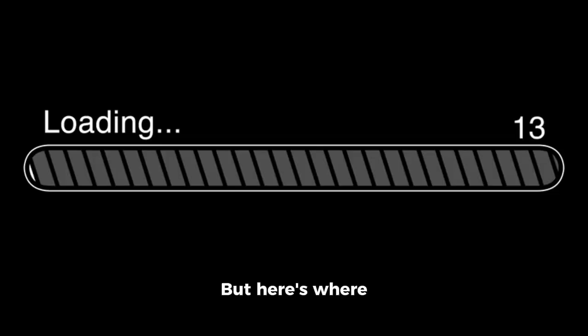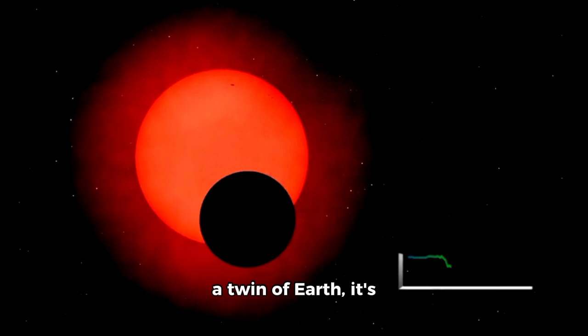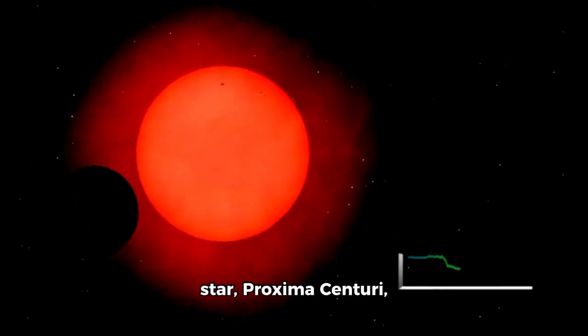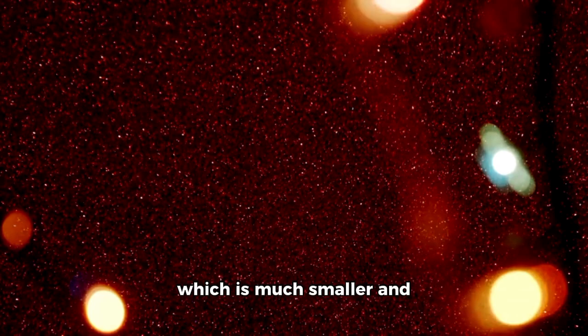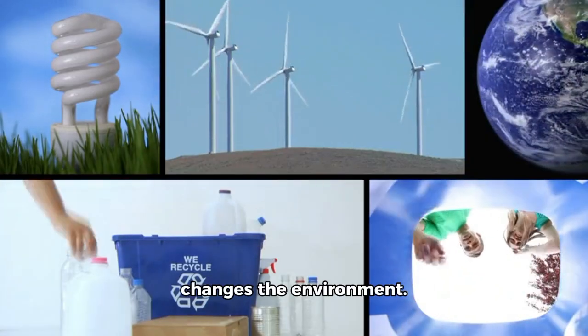But here's where things get interesting. While it might seem like a twin of Earth, it's orbiting a red dwarf star Proxima Centauri, which is much smaller and cooler than our sun. This drastically changes the environment.